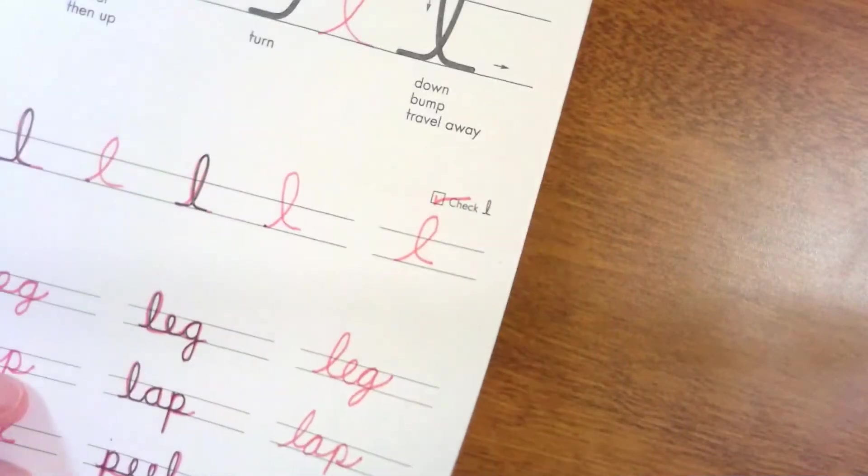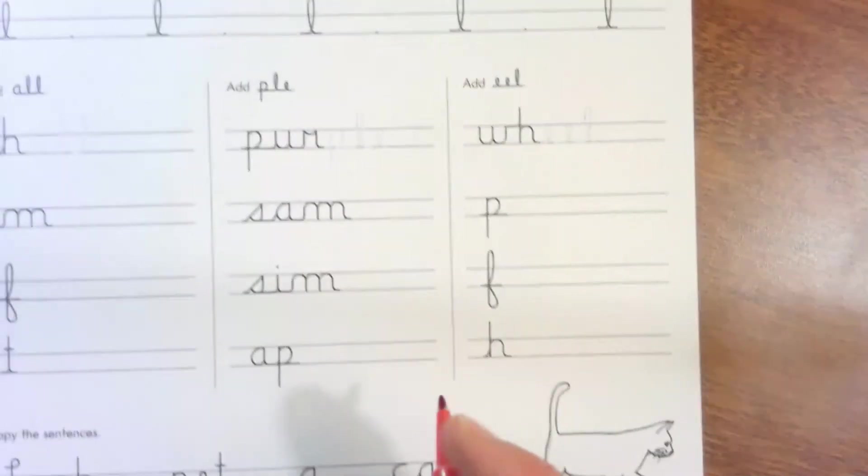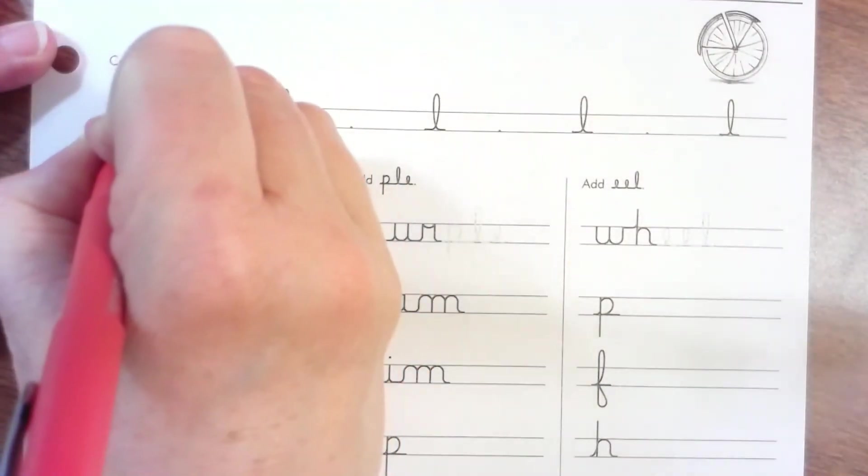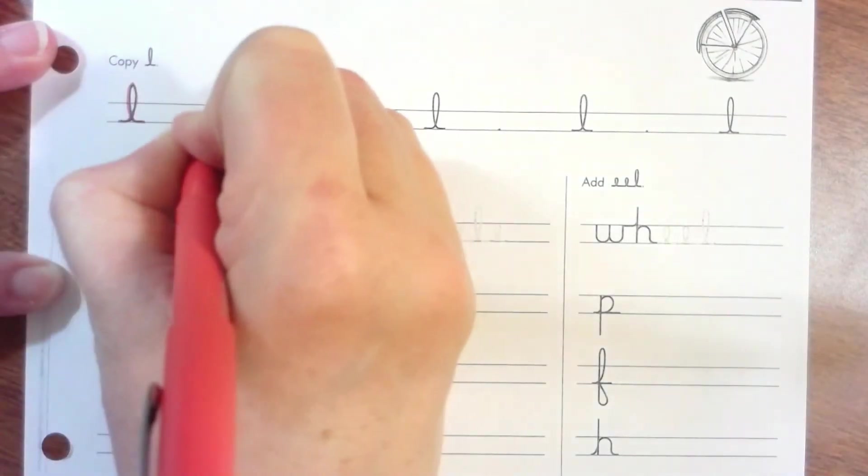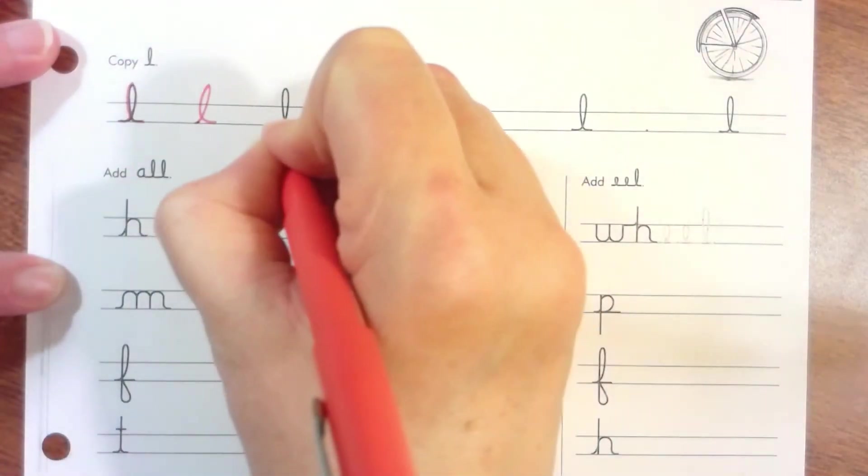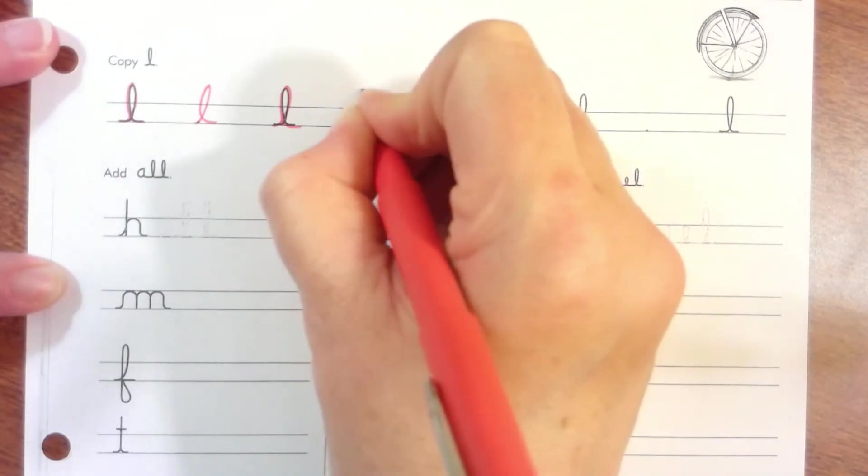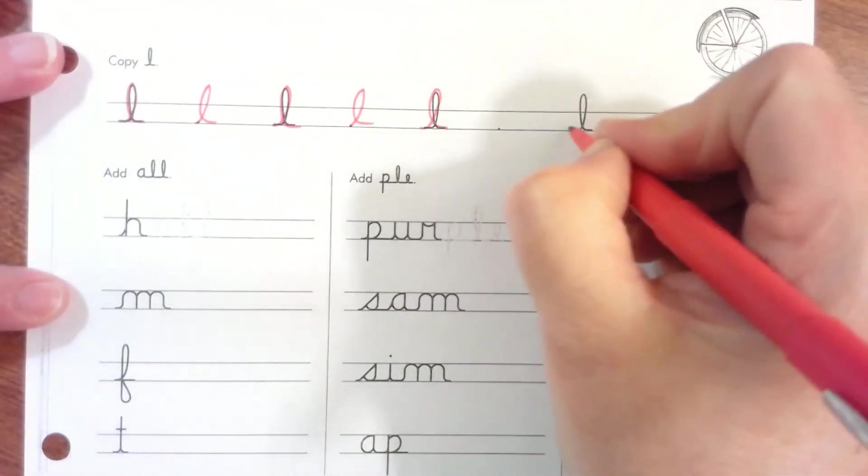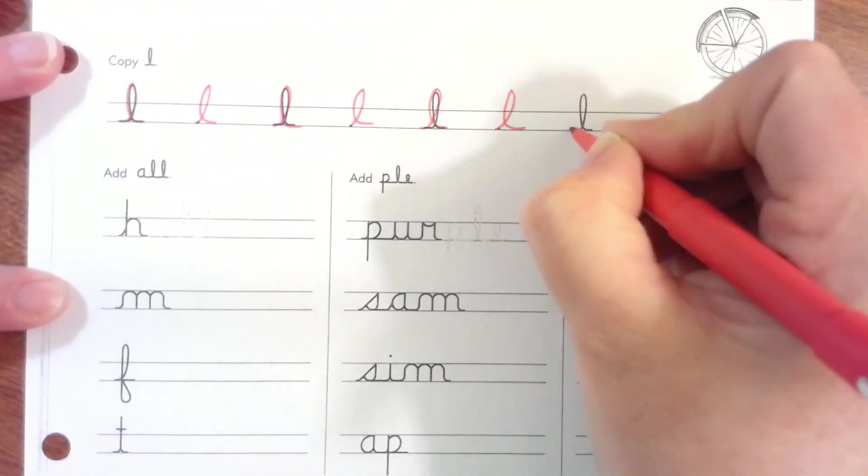All right, now let's head on over to page 23. Now if you notice the lines are getting a little bit smaller and that's okay, but actually it helps us because we don't have to make such a big loop. Just remember to always go all the way above that second line. Travel up, bump and travel back down.